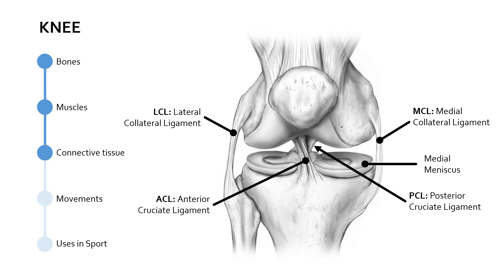Coming back to the menisci, we've got the medial meniscus and the lateral meniscus — C-shaped fibrocartilage structures with two key functions. The first is to deepen the articular surface of the tibia, making it slightly more bowl-shaped so the femur can fit in more neatly and stabilise the joint. The second function is to act as a shock absorber, providing increased surface area to dissipate forces through the knee when we land, run, or jump.